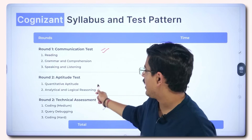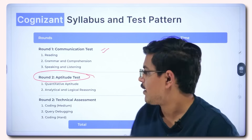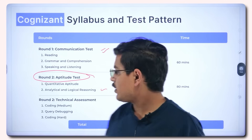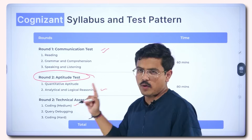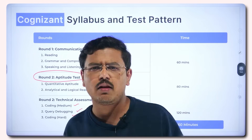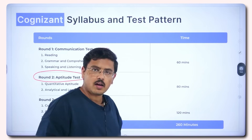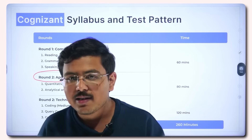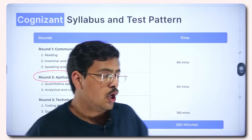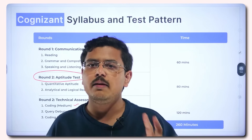Now begins the real game in round two — the aptitude test. Here you have to prepare quantitative aptitude, and alongside that, analytical and logical reasoning. In the technical assessment, you have to prepare one coding medium question, one coding hard question generally, and one query debugging question — so generally three questions in this technical assessment. Cognizant always keeps changing the number of questions so that varies. For time, the communication assessment is 60 minutes, the aptitude is 80 minutes, and for technical assessment you have 120 minutes.